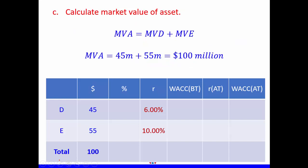The next part is to calculate market value of assets. We know that market value of assets equals market value of debt plus market value of equity. So $45 million plus $55 million gives us $100 million.